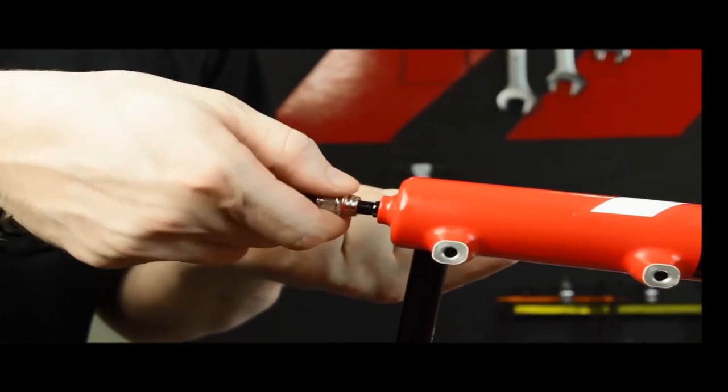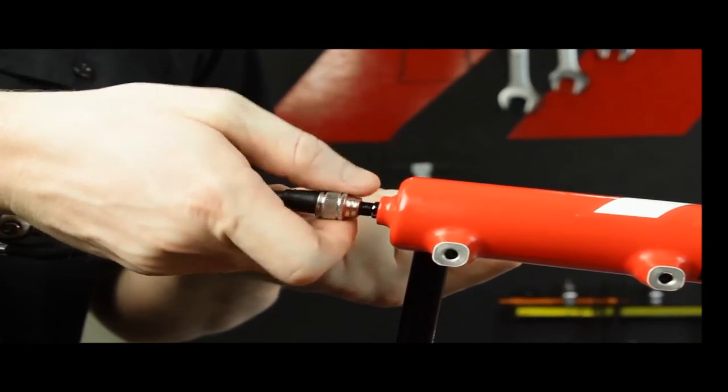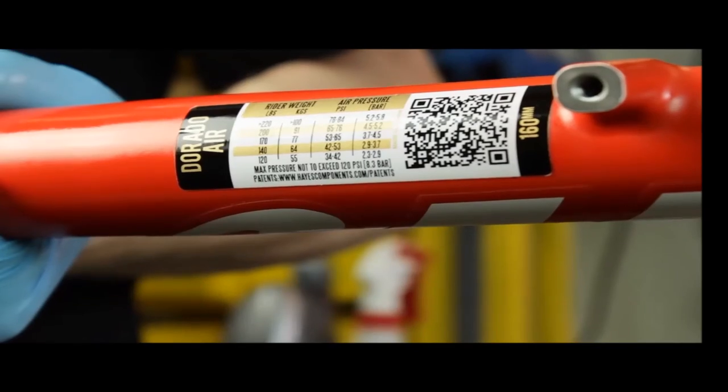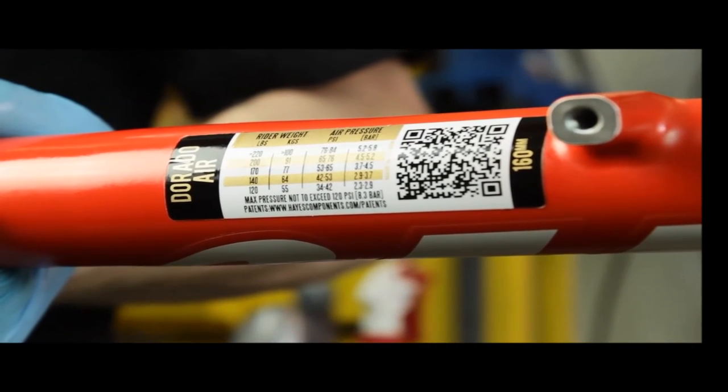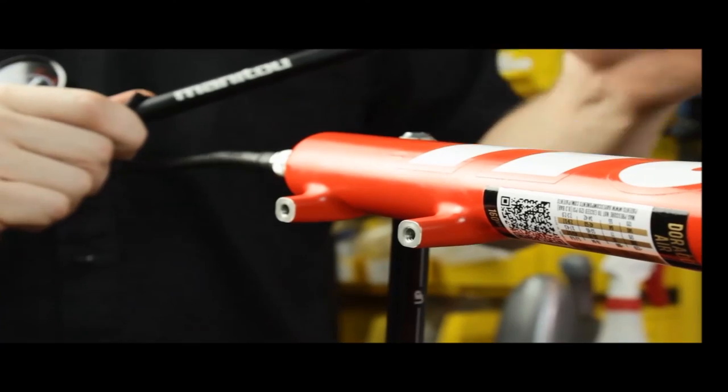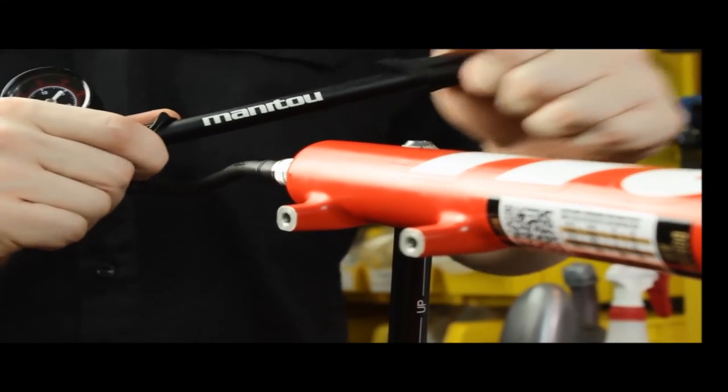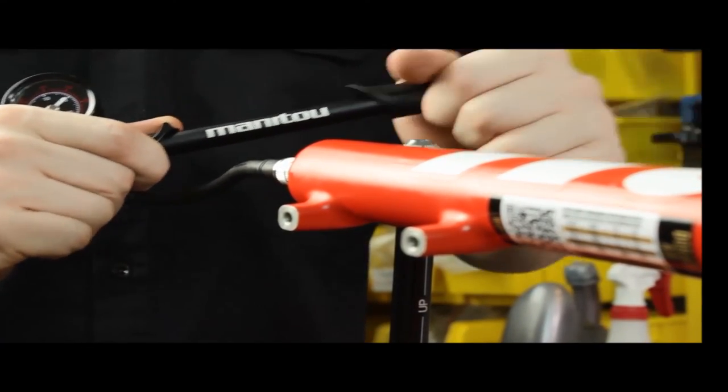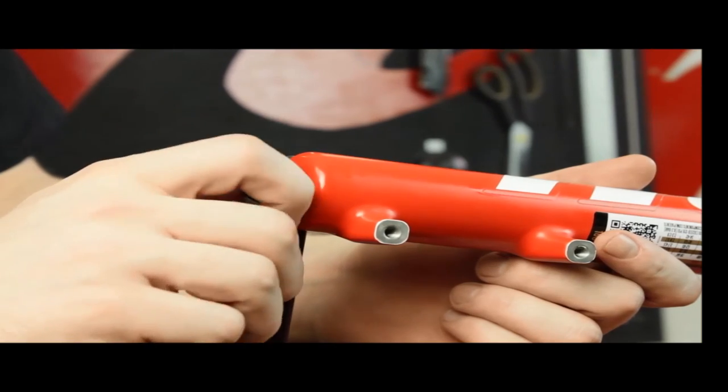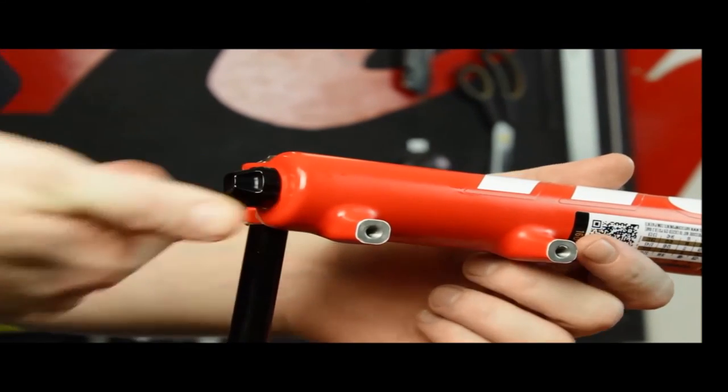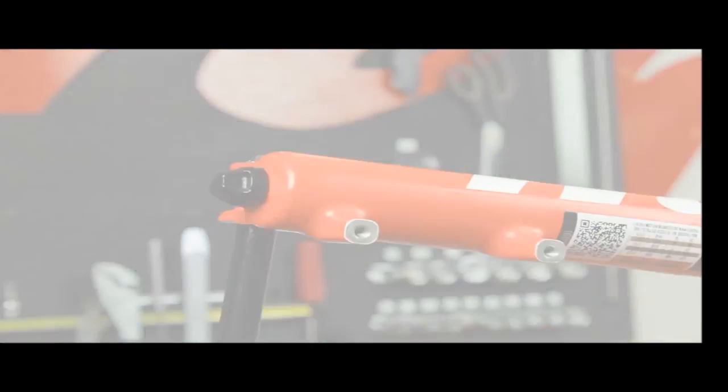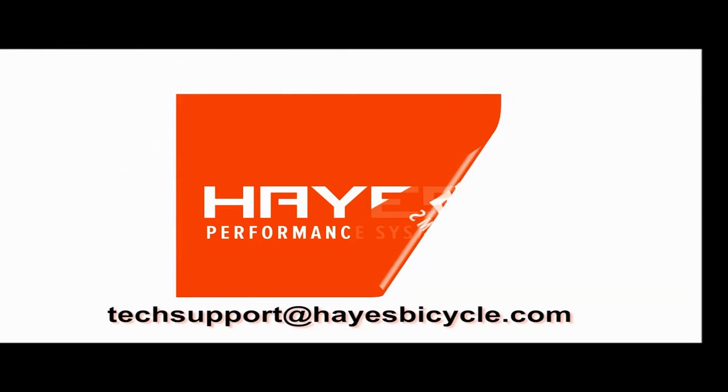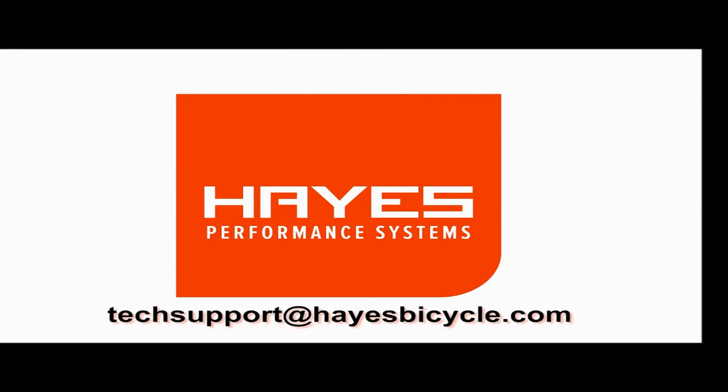Double check to make sure the fork is fully extended by attaching a pump and pulling on the outer casting. Using the weight to pressure chart found on the Matic or at ManitouMTB.com, charge the Matic with the appropriate amount of air to your weight. Reinstall the air valve cap finger tight. Thanks for watching. If you have any other questions just contact us at techsupport at HayesBicycle.com.